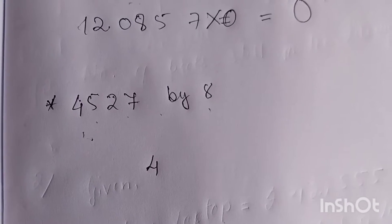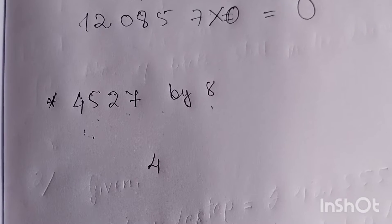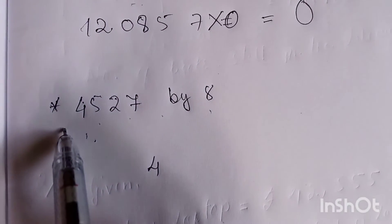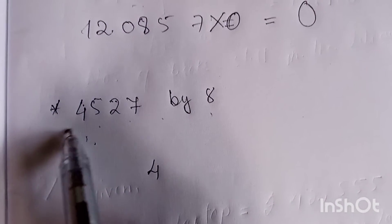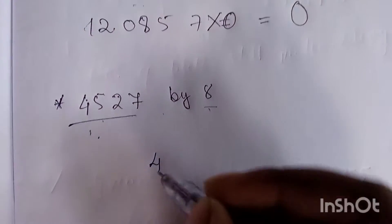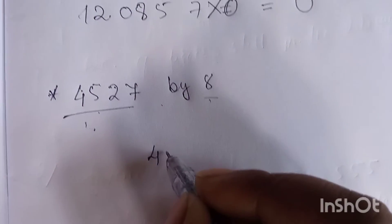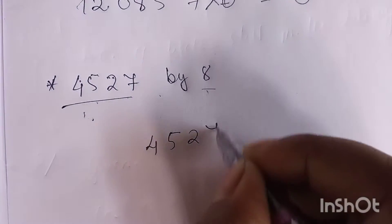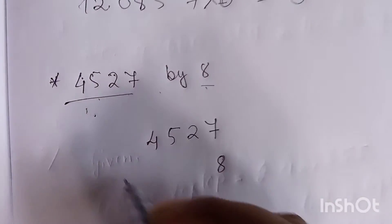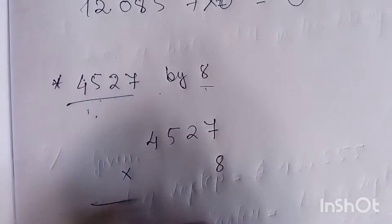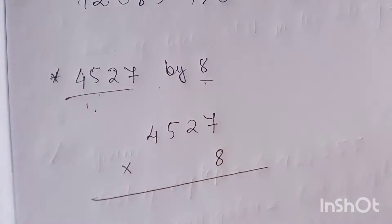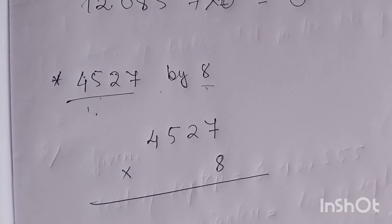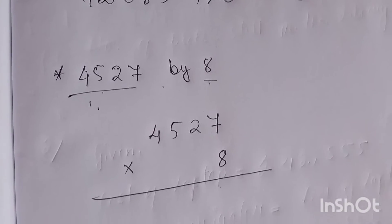Now we are going to learn how to multiply a big number. First we will see how to multiply a big number with a single digit. Let us take the number four thousand five hundred twenty-seven multiplied by eight. You just have to remember the multiplication table.